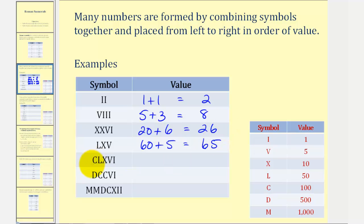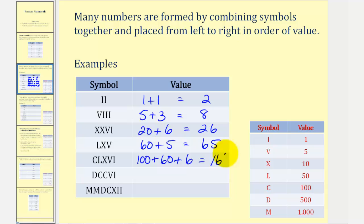Next we have C, which is one hundred, and then we have L followed by X — that would be fifty plus ten, that's sixty, plus V followed by I, that would be five plus one or six. This is one hundred sixty-six. Next we have D, which is five hundred, followed by two C's — that would be five hundred plus one hundred plus one hundred, or seven hundred, plus V followed by I, which is six. So this is seven hundred six.